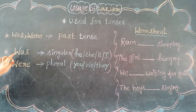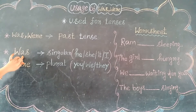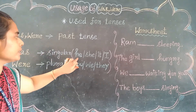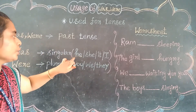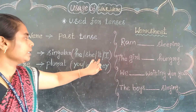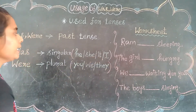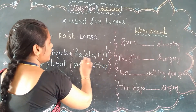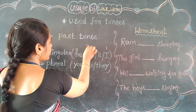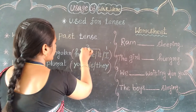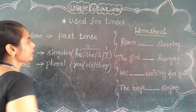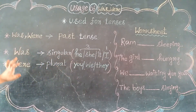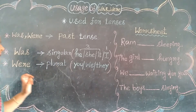Specifically, 'was' is used in singular form. And to whom? See, to which person is it used? He, she, it, I. So, 'I' is the first person. Then he, she, it are the third person. So, first person and third person — it is used, and especially in singular form.